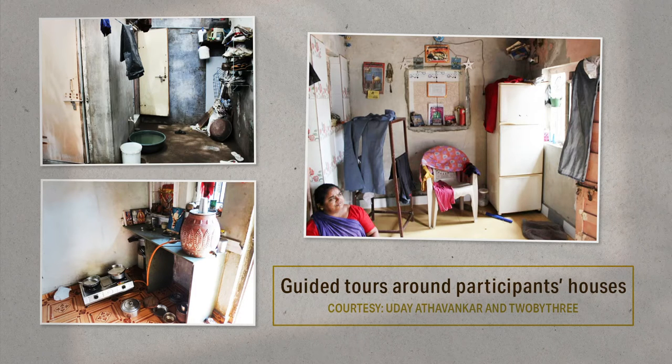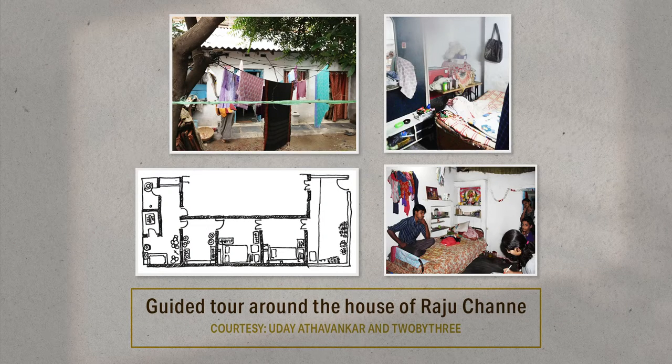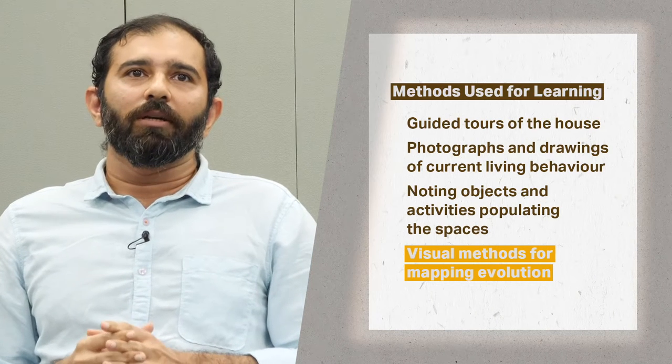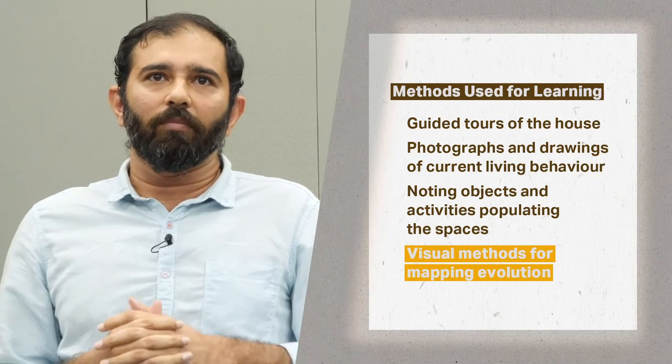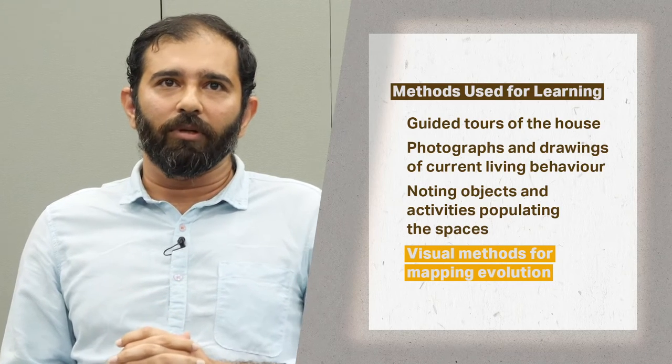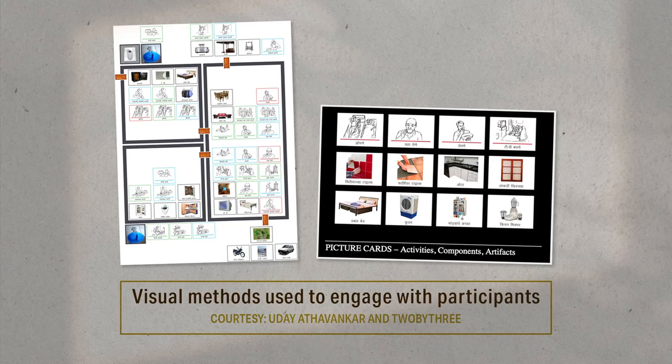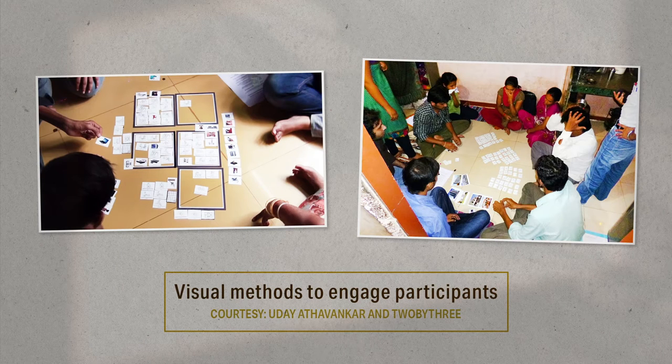For example, the dwelling that a household currently occupies tells a lot about their lifestyle choices and behaviour. Identifying and probing these choices can provide valuable insights into the household's current struggles for self-betterment. We asked household members to give us a guided tour of their houses. We also captured photographs and drawings to understand how households inhabited their spaces, if and how they modified them, and what they chose to populate them with. We also created a deck of cards with household products, furniture, and home improvements.